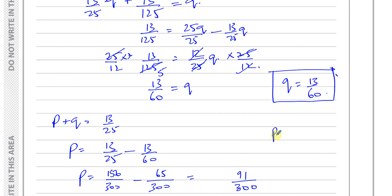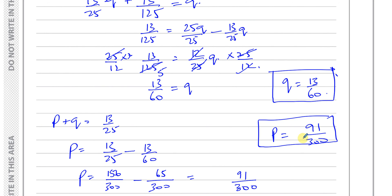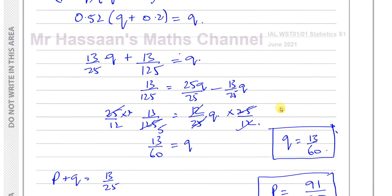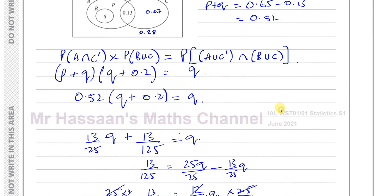So the value of P is 91/300 and Q is 13/60. The key to this whole question is understanding independent events: when two events are independent, the product of their probabilities equals the probability of their intersection. That's the end of question 2 from this S1 paper.